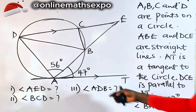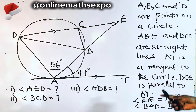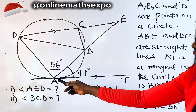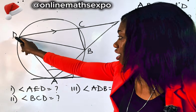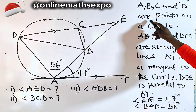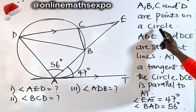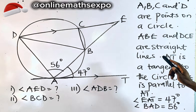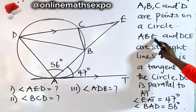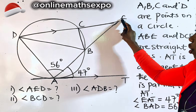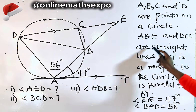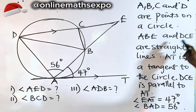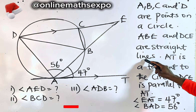We are given this diagram. The question tells us that A, B, C, and D are points on a circle. We are also told that A, B, E and D, C, E are straight lines — you can see these two lines in the diagram.